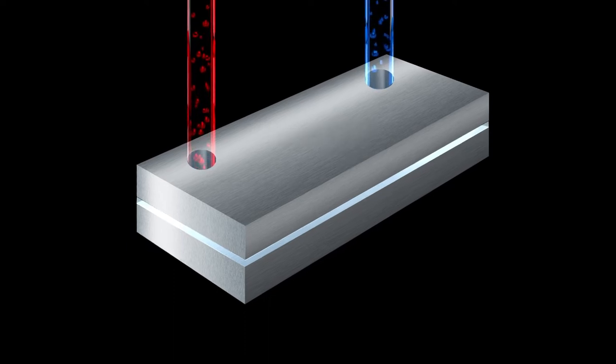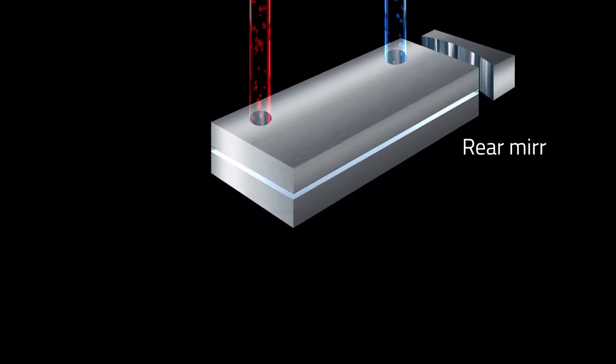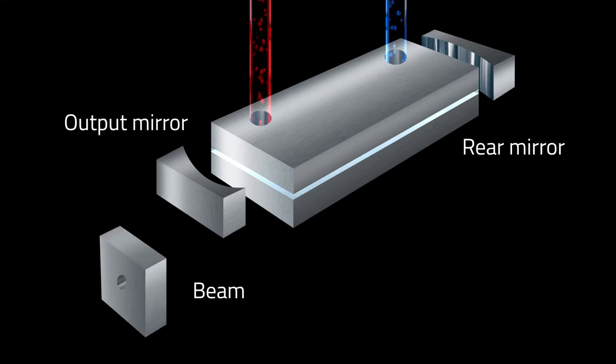A mirror is placed at each end forming an optical resonator. One of the mirrors is partially reflective, allowing light to exit the resonator.